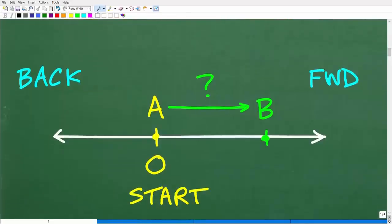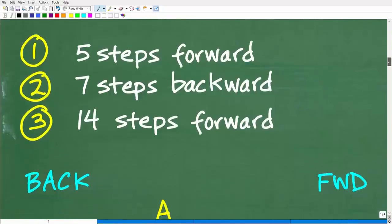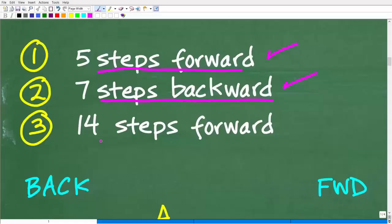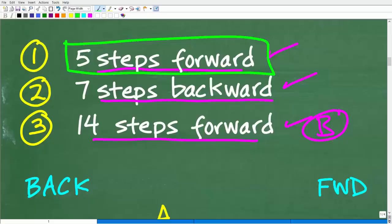Let's do this in a simple manner first, as some people might be a little confused. Let's take a look at the steps — our directions from point A to point B. First, we take five steps forward. Once we get to that destination, we turn around and take seven steps backwards. Then we turn around again and take 14 steps forward, and we will have arrived at point B. Let's go ahead and take this literally step by step, starting with five steps forward.